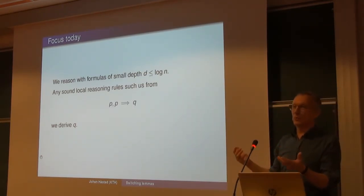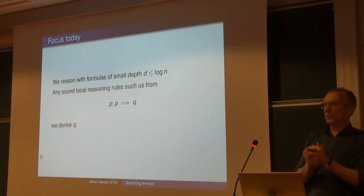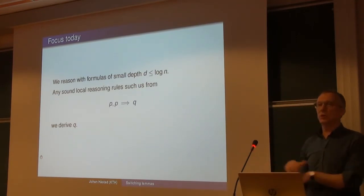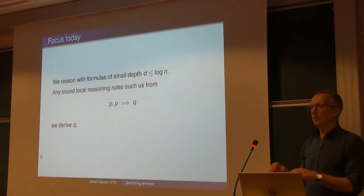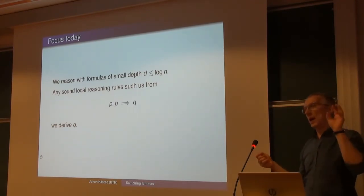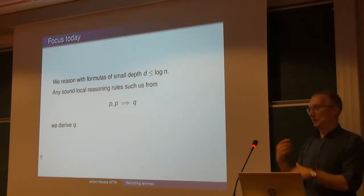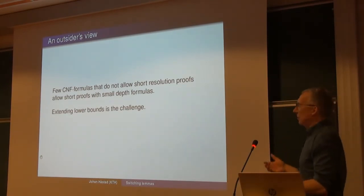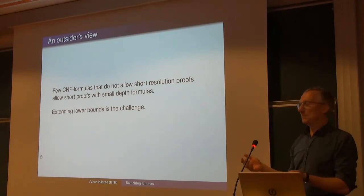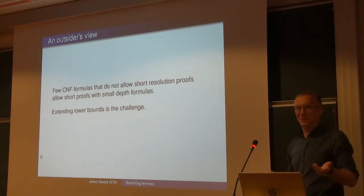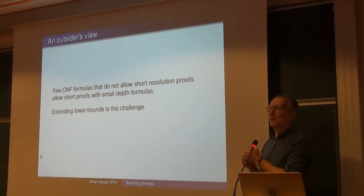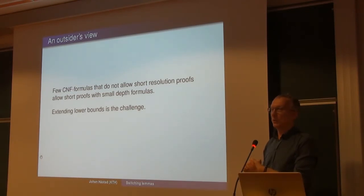The focus today is allowing reasoning rules to be depth-D circuits — that's what we're good at. The rules are simple: if you know P and that P implies Q you can derive Q, and if you know A OR B that's the same as B OR A. The name of the game is not to write nice proofs of simple things but to prove lower bounds — to show this doesn't buy you much. Experience says that for natural things, if you can't do them in resolution it's usually hard to do them in depth 2 or depth 3.